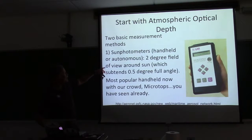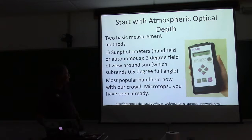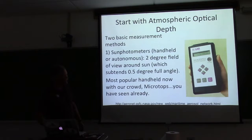The sun photometer — the microtops — has a two-degree field of view around the sun. The sun's only a half a degree inside there, so it gives you a little slop.